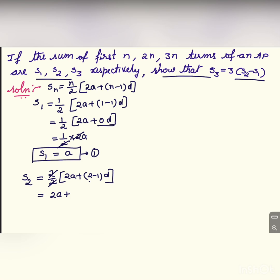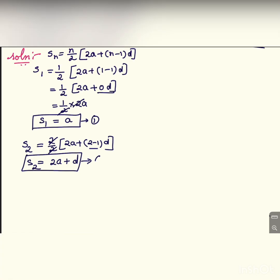So 2 and 2 can be cancelled. 2a plus 2 minus 1 is 1. So 1d is d. s2 is 2a plus d. Let me take this as equation 2.